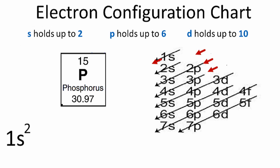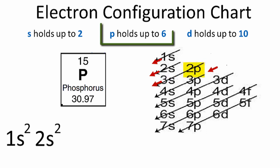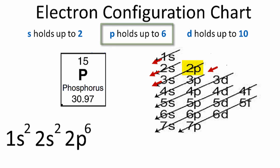We'll go down the next row, which is the 2s, and in the 2s orbital we'll put 2 electrons. In the third row, the first term is 2p. P orbitals can hold up to 6 electrons, so in the 2p we'll put 6 electrons, and we've used 10 electrons so far.